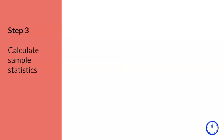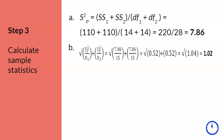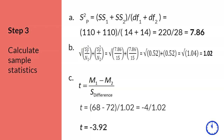Step three. There are several new formulas in this step — slow down when doing calculations. First, calculate pooled variance. Second, calculate estimated standard error. Finally, use the modified t-score formula to compare the two sample means. Using all these values, the t-score for the sample is t equals negative 3.92.